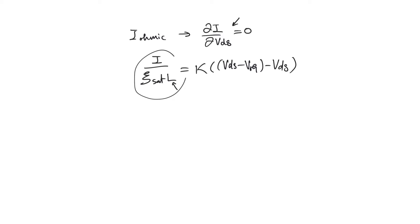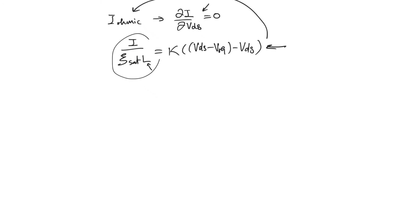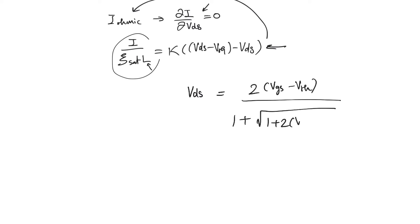Because we already have the expression for current in terms of VDS, we can substitute that into the saturation condition and solve for VDS_SAT. This gives an expression: VDS_SAT equals 2 times (VGS minus VTH), divided by 1 plus the square root of (1 plus 2 times (VGS minus VTH) divided by ESAT·L).